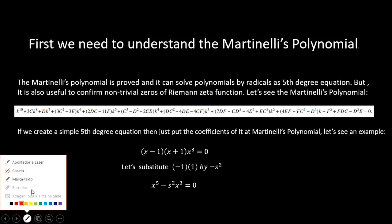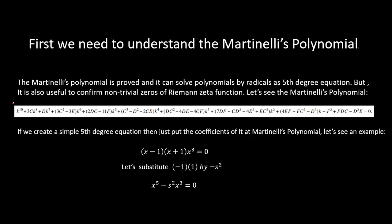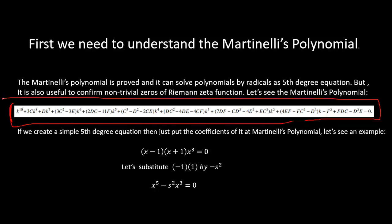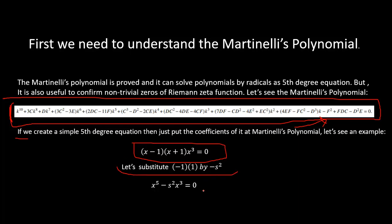Let's look at the Martinelli's polynomial. If we create a simple 50-degree equation, we just put the coefficient of it into the Martinelli's polynomial. Let's see an example — this is a degree-2 equation, so let's substitute x by minus s to the power 2. We get this equation.